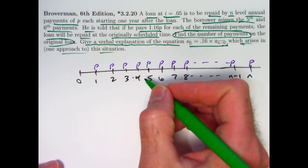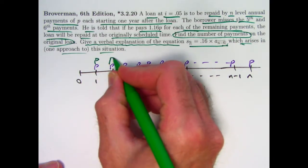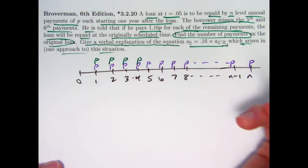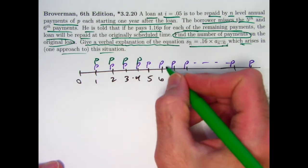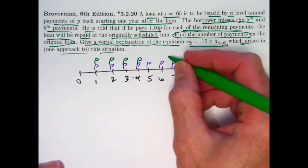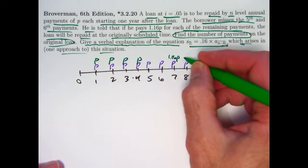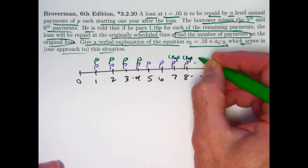But the borrower misses the 5th and 6th payments at times 5 and 6. The actual situation is the borrower pays P for the first four payments, misses payments 5 and 6, and then pays 1.16 times P, starting at time 7 for all the remaining payments.